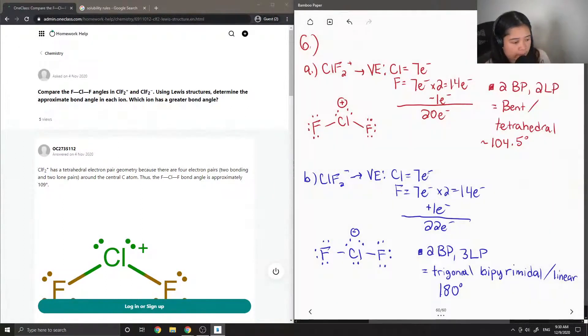Now that we know both of the bond angles of our structures, we can say that the negatively charged chlorine difluoride has a greater bond angle.